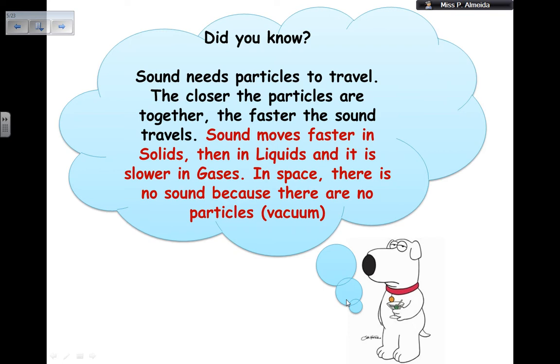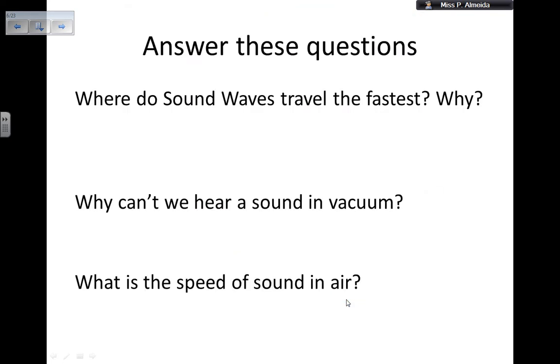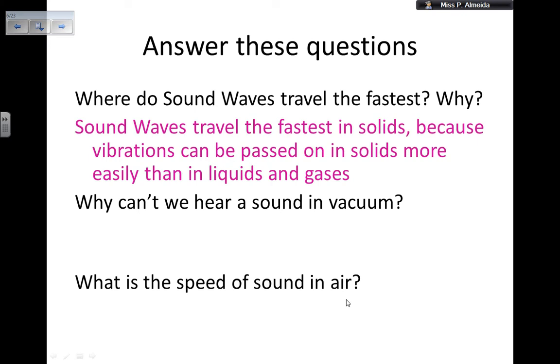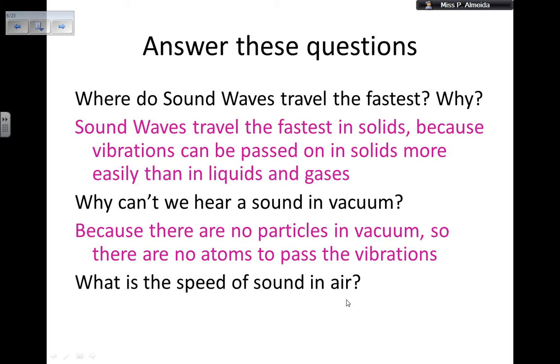If you're watching this video because you have an exam or a test coming up, this is quite an important thing to know. Normally, people need to explain where sound travels faster or why you cannot hear sound in a vacuum. Let's put here some questions, things that you should know by heart now. Where sound travels fastest and why? Sound travels faster in solids because vibrations can be passed on in solids more easily than in liquids and gases. Why can't we hear sound in vacuum? Because there are no particles in vacuum, so there are no atoms to pass on the vibrations. What is the speed of sound in air? It's 343 meters per second, but many times I see 340 meters per second. All these questions were things that came up in the past.